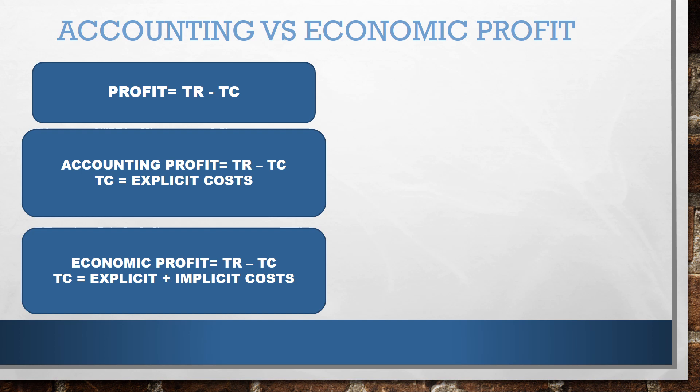An economist adds both implicit and explicit costs into total cost, and that's how accounting profit will always be greater than economic profit. Firms in the long-run scenario make zero economic profit, yet they choose to stay in business because zero economic profit equals positive accounting profit — a normal profit — meaning their implicit and explicit costs are being covered.